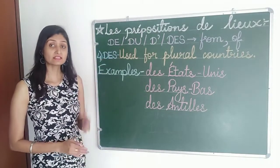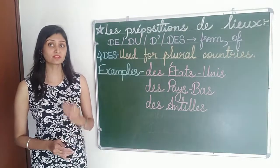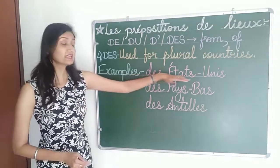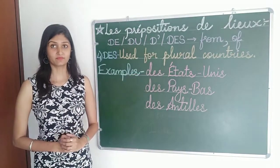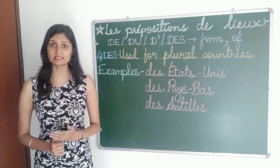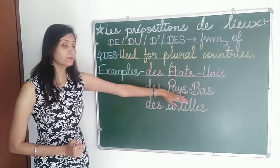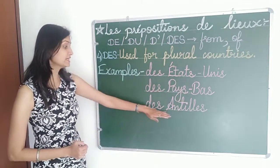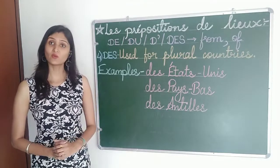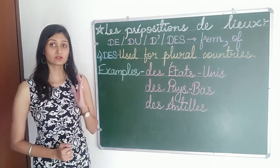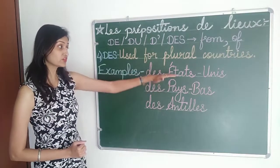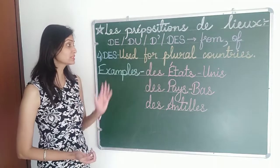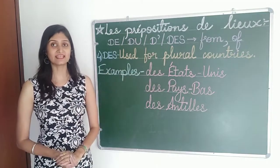The last preposition is des, d-e-s. It is used before plural countries. For example, des États-Unis — from the United States. Des Pays-Bas — from the Netherlands. Des Antilles — from the West Indies. So whenever you see plural countries, we are going to put des before those country names.